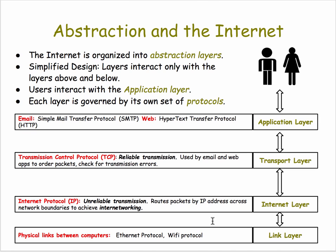Finally, the bottom layer is the link layer. In addition to the physical links between computers — such as wires, which are used in the ethernet protocol, or radio signals, which are used in the wifi protocol — this layer manages traffic within a local area network, such as within your computer lab.